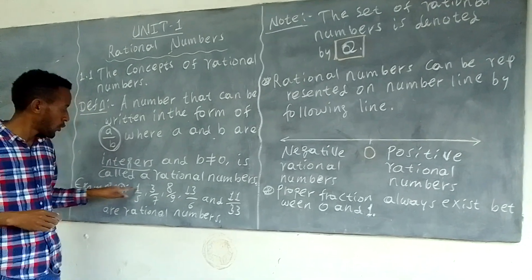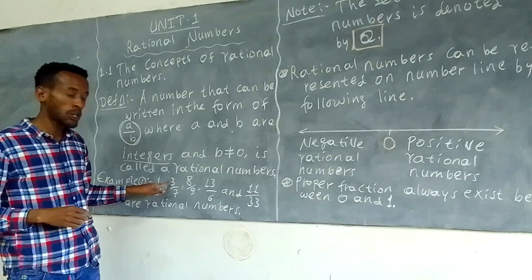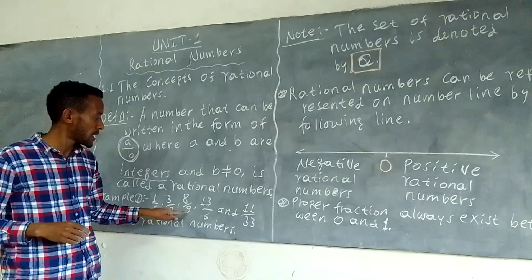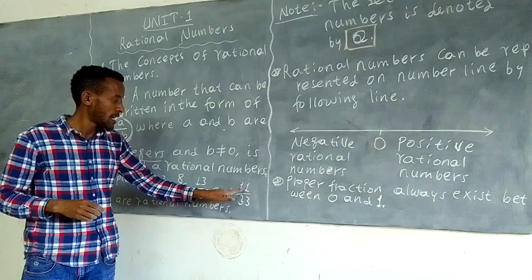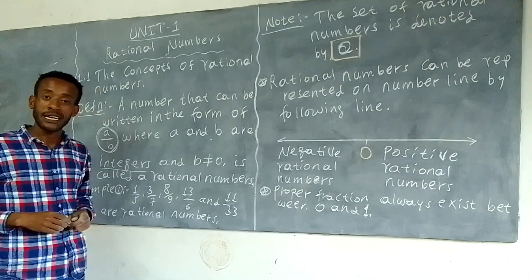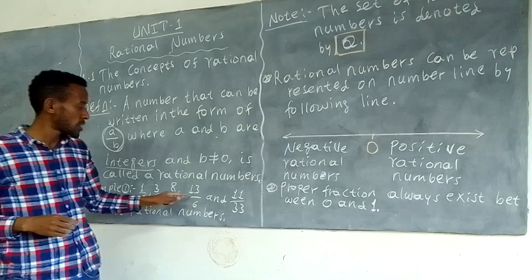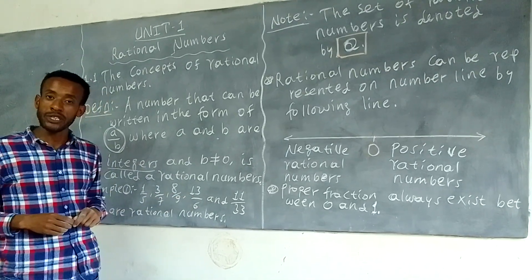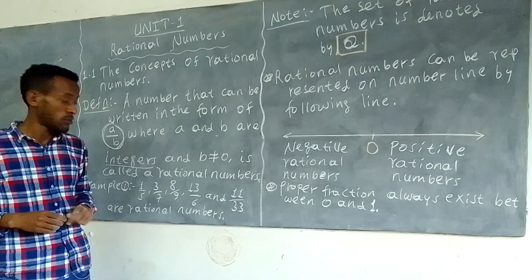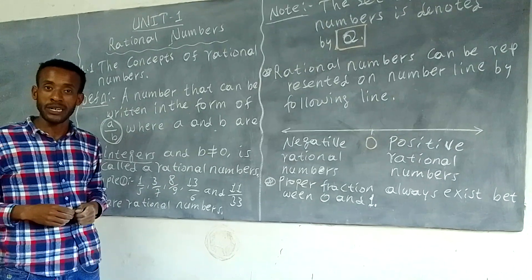For example: 1/5, 3/7, 8/9, 13/6, and 11/33 are all rational numbers.